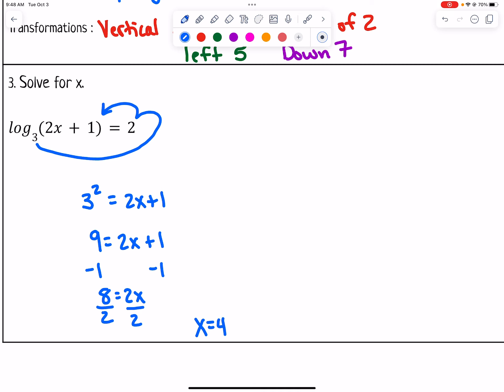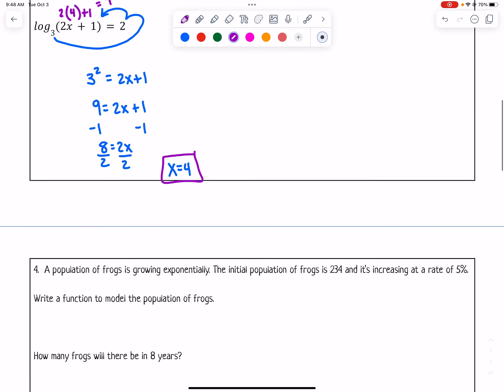You just want to plug it back in and make sure that does not give you a negative value in this parentheses that we're taking log of. So 2 times 4 plus 1 is a positive number since that would equal positive 9. So x = 4 should be a good answer for number 3.